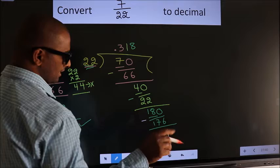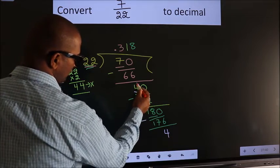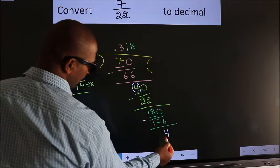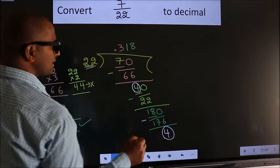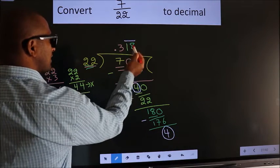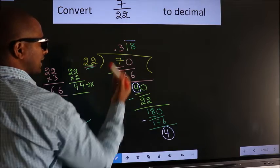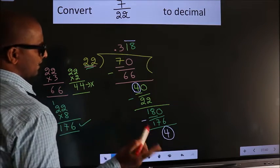Now you check. Here we had 4. We got 4 again. That means these 2 numbers repeat. So therefore,